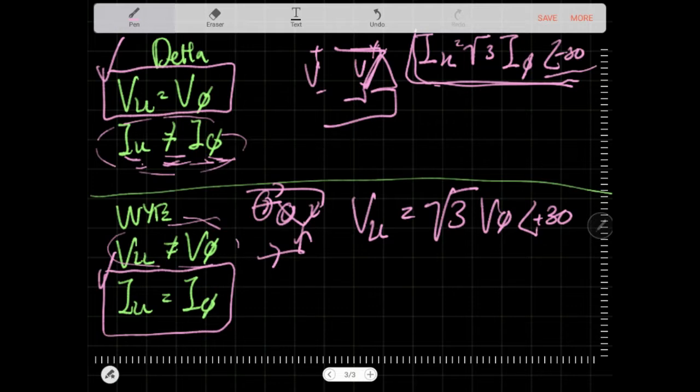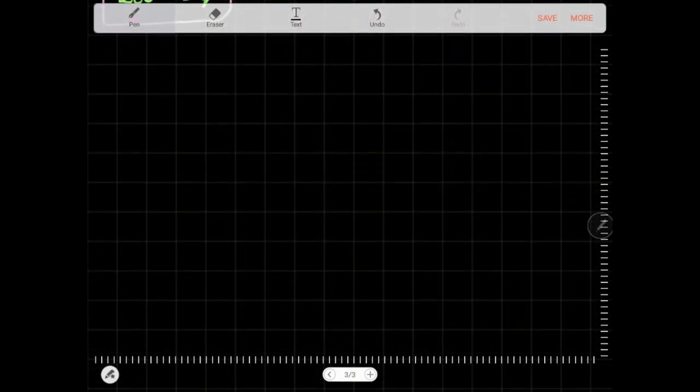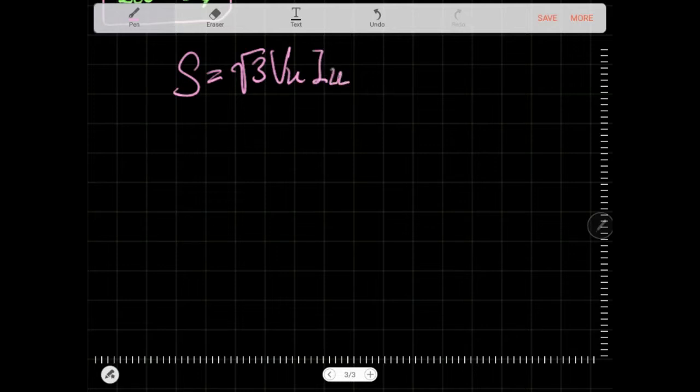So we look at the grand formula. The grand formula is something like this. Power, it equals root 3 V line-to-line and I line-to-line. That's one of the formula that you see a lot. There's also another formula that is there. I tend to use this one a lot. 3 V phase I phase. So these are the terms that you look at. While these people are like, hey, is it 3 or is it root 3? You may get confused. They are both correct. Depends on how you use them.